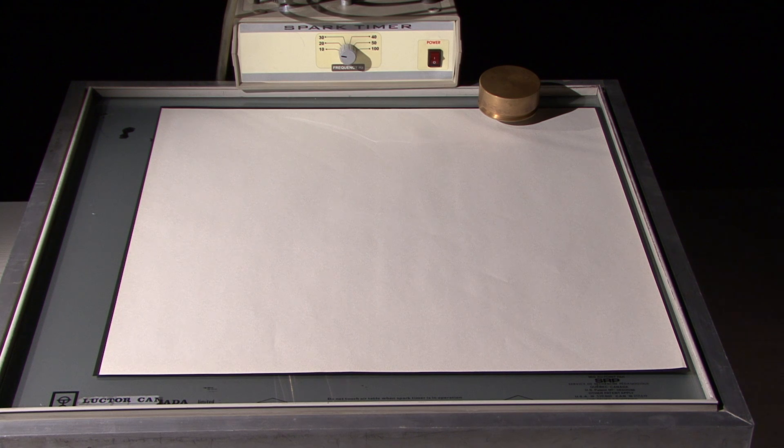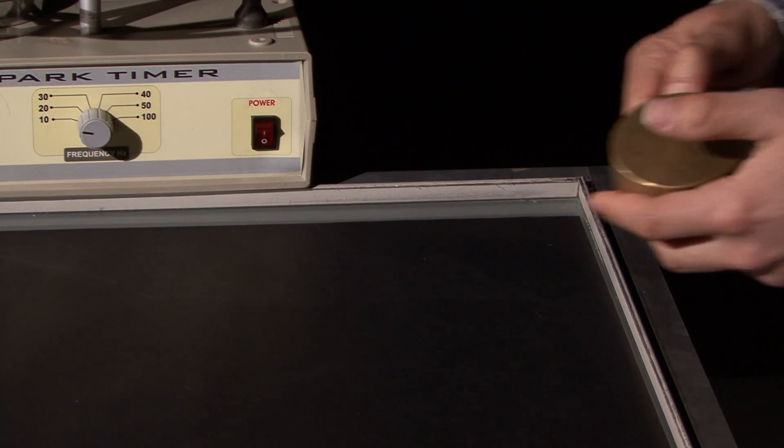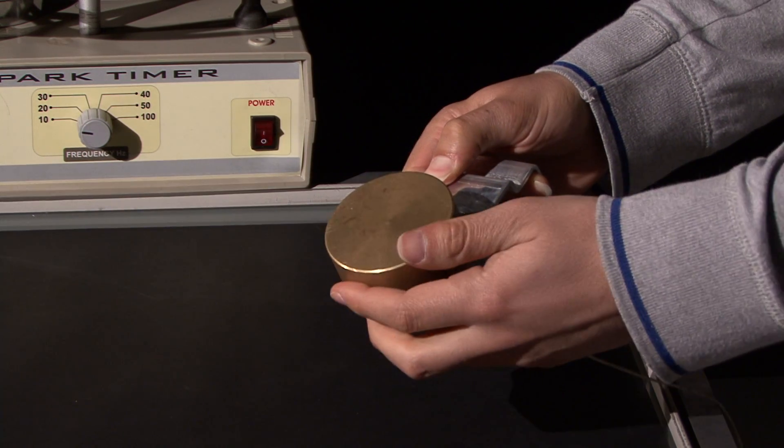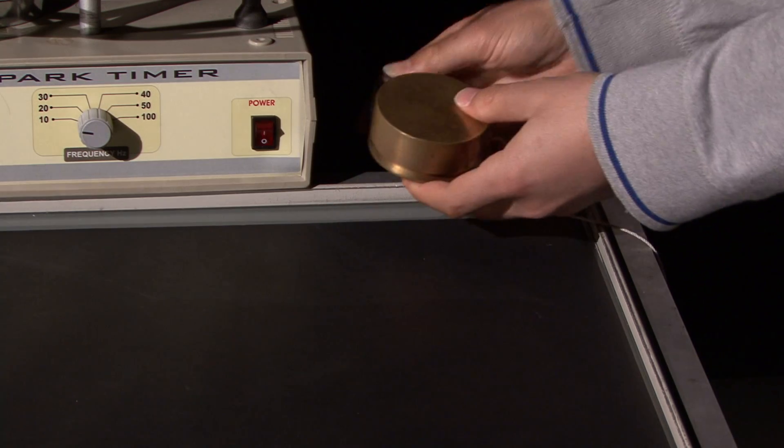5th experiment: rotational motion. In this experiment, motion of an object having a non-zero moment of inertia will be examined. The object is a disk-shaped pulley. First, place the data sheet.